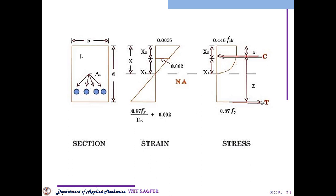You can see this diagrammatical representation of a singly reinforced beam, reflecting the stresses and strain in the top-most and bottom-most directions. Strain in a singly reinforced beam is given by 0.87 Fy / Es + 0.002, and at the top-most portion it is 0.0035. The stress at the bottom is given by 0.87 Fy and the stress at the top is given by 0.446 fck. This value we will use in our design calculations.